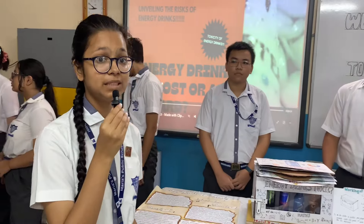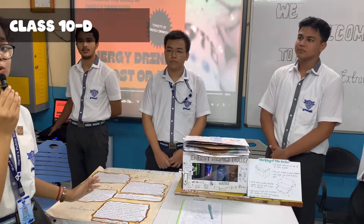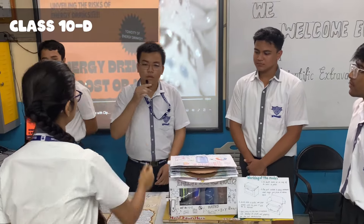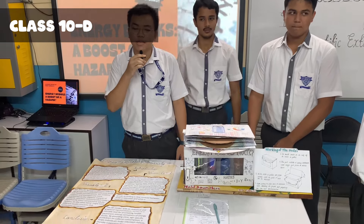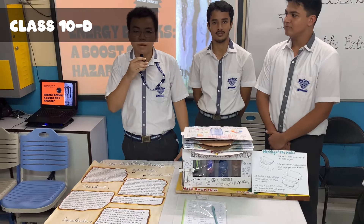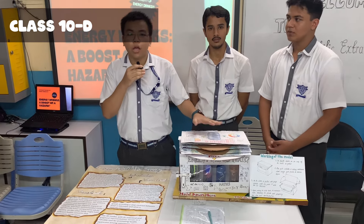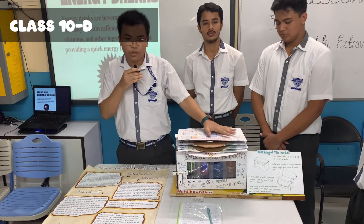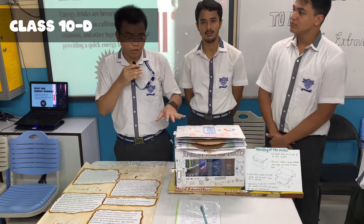Now we have a mathematical model made by the students of Class 10D, also based on the toxicity of energy drinks. Good morning. Today we are presenting a mathematical model on the toxicity of energy drinks. We consume energy drinks daily but do not know the toxicity. With this model, we will show the demographics of the age composition and consumption of toxic energy drinks. We have taken four examples: Red Bull, Gatorade, Sting, and Monster.